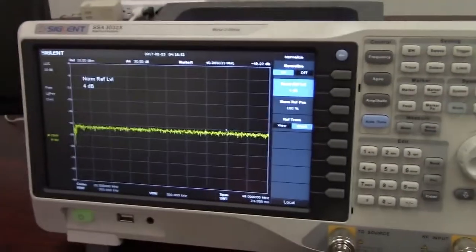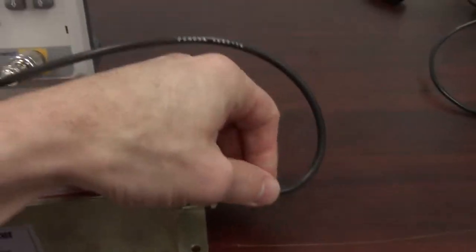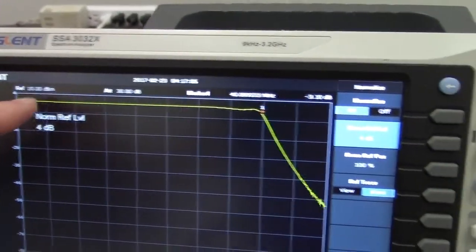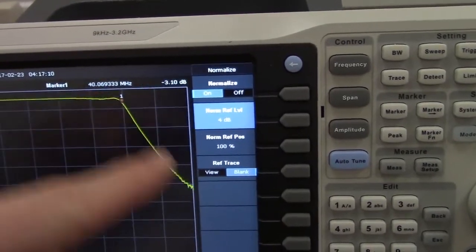And connect that to the filter. So, here we've got it connected to the input of the filter. And now we'll connect to the output. Aha! Alright. So, now we've got a very nice trace. Very nice and flat. And now you'll see that the filter is starting to roll off.